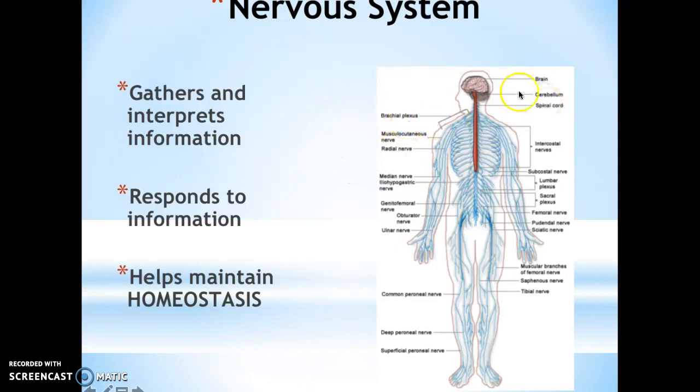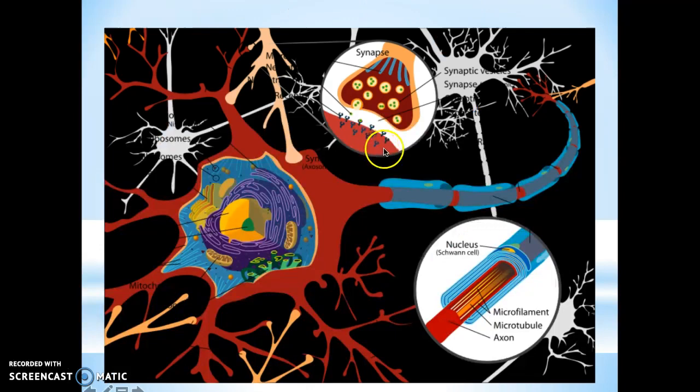Some things you have to remember about the nervous system: it is made of the brain, spinal cord, and then you have a lot of nerve cells all throughout your body. These nerve cells we call neurons. They are quite complex — perhaps we'll talk a little bit about that in a later topic.